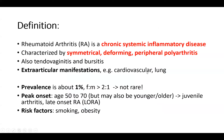By definition, rheumatoid arthritis is a chronic systemic inflammatory disease, characterized by symmetrical, deforming, and peripheral polyarthritis. There is also tendovaginitis and bursitis, as seen in this picture. The disease is systemic, so it can also have extra-articular manifestations, for example cardiovascular or lung disease.